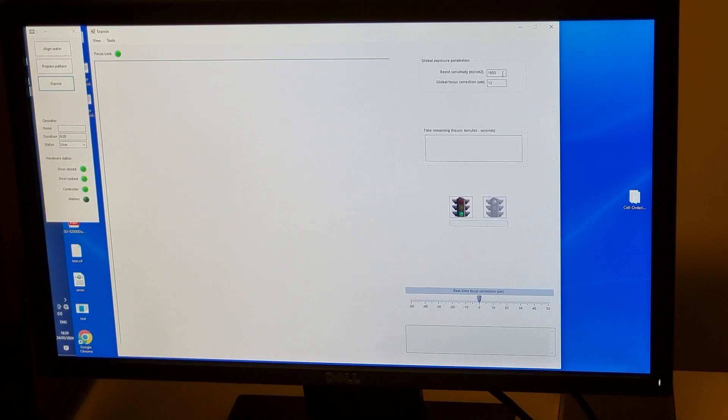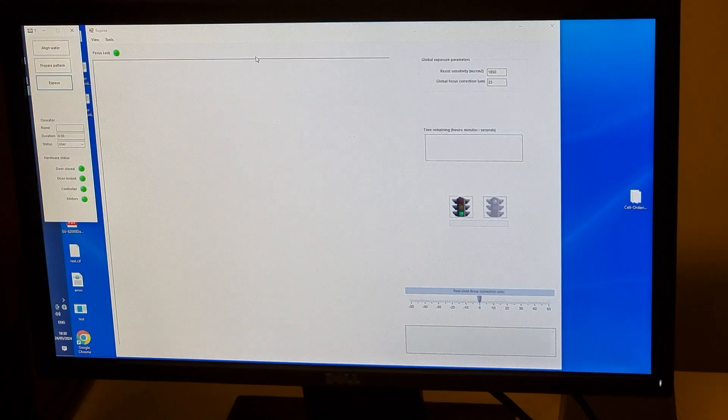The final window is exposed. Here you set the dose energy, or resist sensitivity, in millijoules per square centimeter, and any focus correction. The focus correction is a distance above the surface where you want the pattern to be in focus. For SU8, it is good to set this at about 30 to 60 percent of the film thickness. Our film is about 50 microns thick, and we are trying to place the focal plane in the middle of this film.